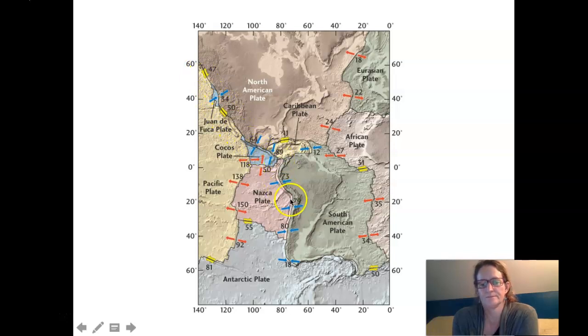We have the Nazca Plate subducting under the South American Plate. This is a little Cocos Plate that's subducting under Mexico and Central America.